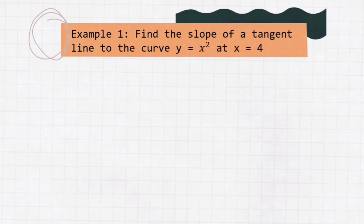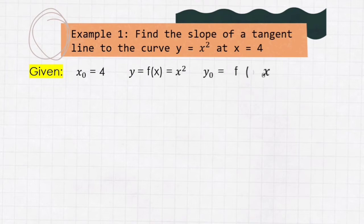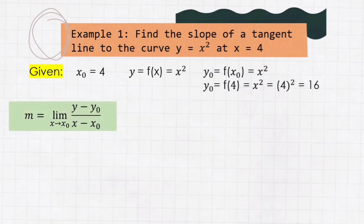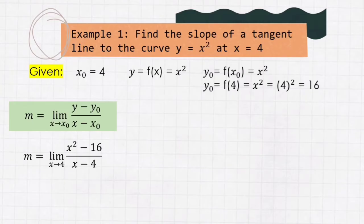Example number 1: Find the slope of a tangent line to the curve y = x² at x = 4. The given are x₀ = 4, y = f(x) = x², and y₀ = f(x₀) = x² — substituting the value of x₀ gives f(4) = 4² = 16. Using the first formula, m = limit of (x² − 16) / (x − 4) as x approaches 4. Substituting x = 4 gives 0 over 0, an indeterminate value.